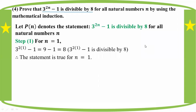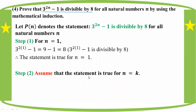The statement is true for n equal to 1. Step two: assume that the statement is true for n equal to k. That means 3^(2k) - 1 is divisible by 8.